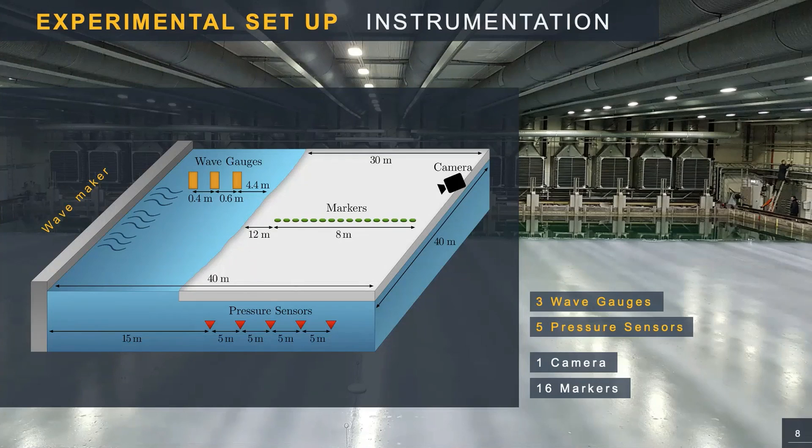Three wave gauges were placed in the open water strip, and five pressure sensors below the ice cover to track the water surface elevation along the tank. A camera was installed at the end of the tank, five meters above the ice cover, and inclined of 45 degrees to record videos of the ice surface. And 16 markers were positioned on the ice sheet to provide reference, and allow the reconstruction of dimensions during the video analysis.